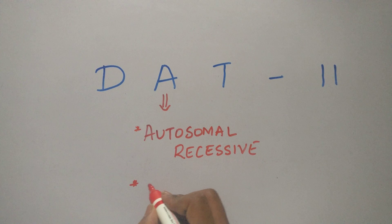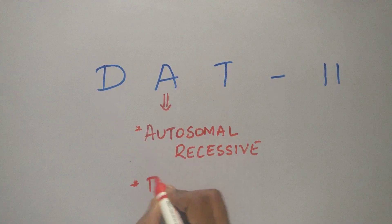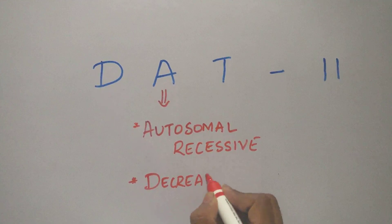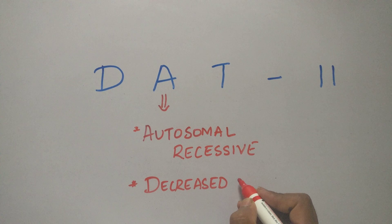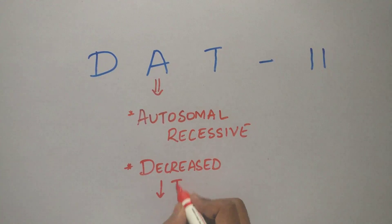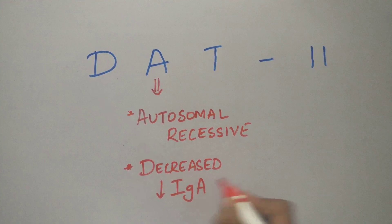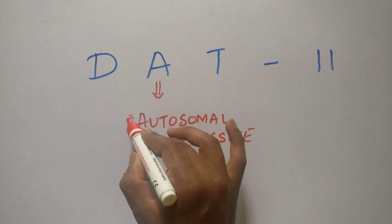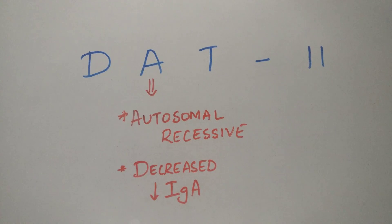A also stands for decreased levels of IgA. Therefore, A stands for autosomal recessive disease and there are also decreased levels of IgA in Ataxia Telangiectasia.